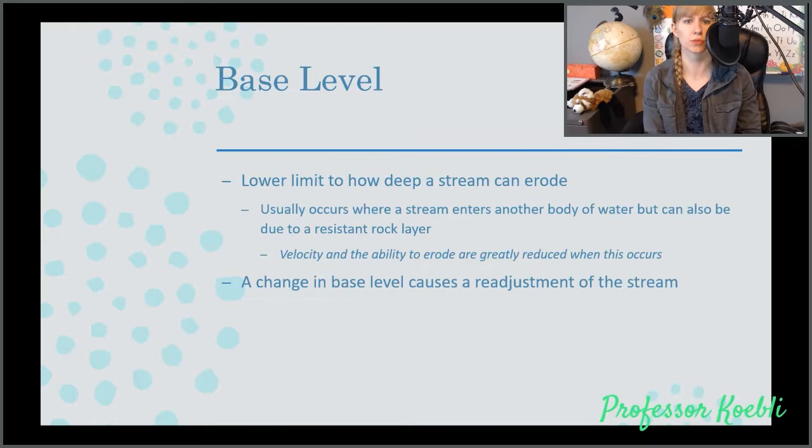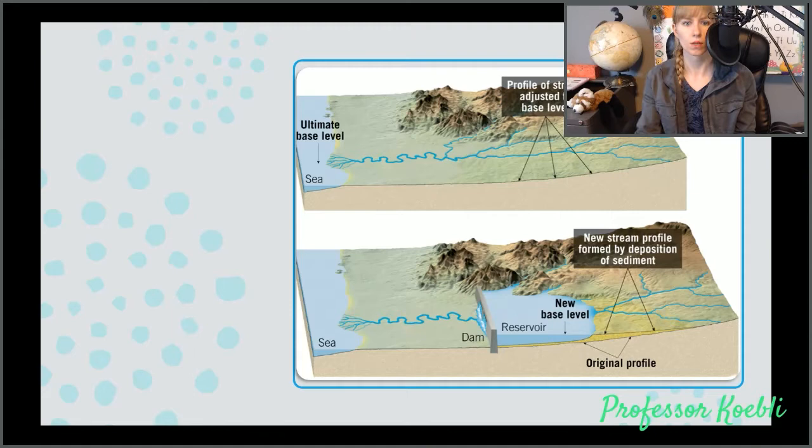The velocity and the ability to erode are greatly reduced when this occurs, but a change in base level can cause a readjustment of the stream. Instead of sea level, which is the ultimate base level, you might reach a temporarily resistant rock layer. As soon as that stream breaks through that rock layer, base level will have dropped and the stream will start eroding as it had previously.